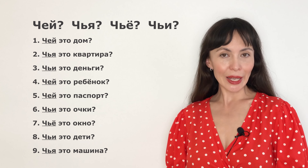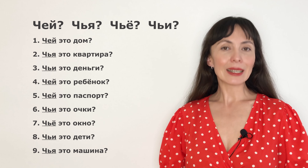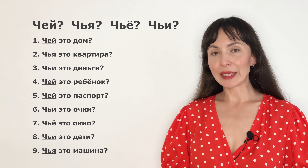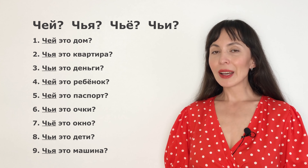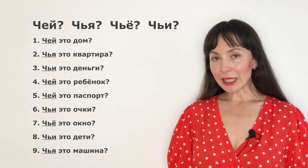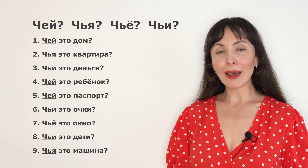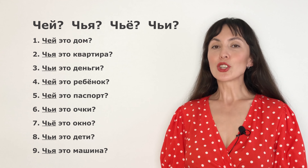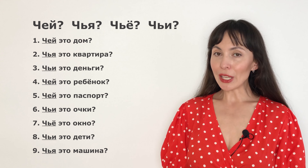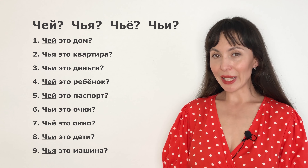Чей это дом? Чья это квартира? Чьи это деньги? Чей это ребенок? Чьи это деньги? Чьё это домик? Чьей это семьи? Чьей это вариант?